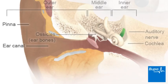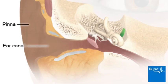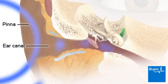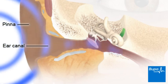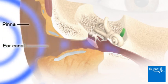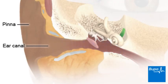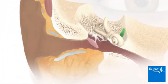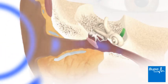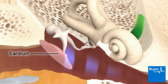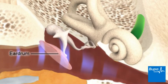The pinna acts like a funnel to collect the sound waves. These sound waves pass through your ear canal. Here we show the sound waves entering the ear and reaching the eardrum, causing it to vibrate.